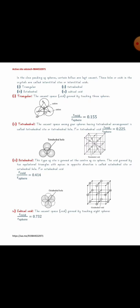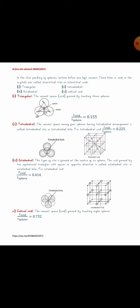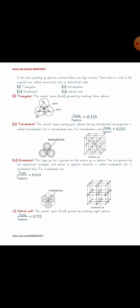The second type is the tetrahedral void, which we also discussed in a previous class. If you take a triangular void and place a fourth sphere above it, a small empty space forms between these four spheres. This empty space is tetrahedral in shape because joining the centers of the four spheres that surround this void gives a tetrahedron, and the empty space lies exactly at the center of this tetrahedron — hence it is called a tetrahedral void. The radius ratio is 0.225.